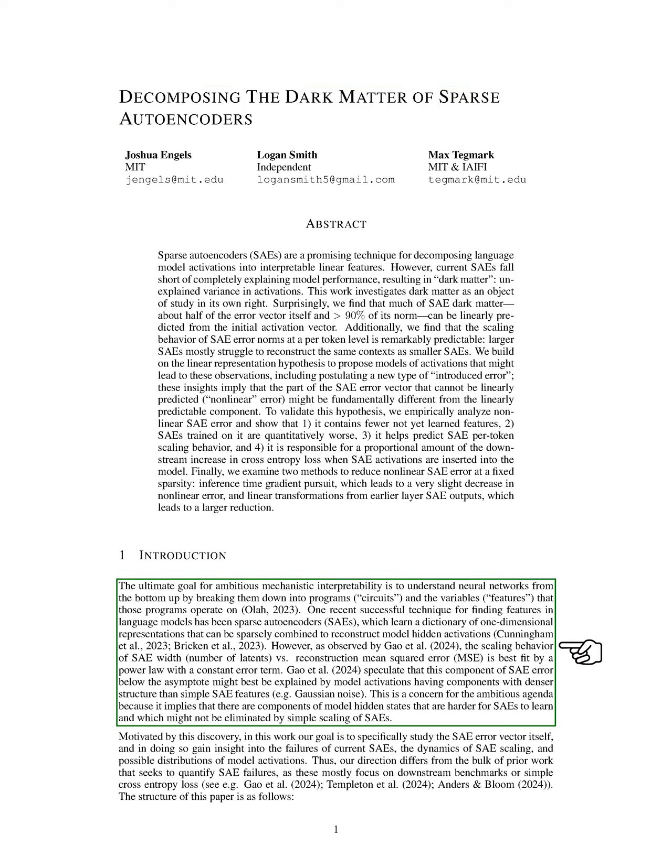Introduction. In this section, we aim to explore the ambitious goal of mechanistic interpretability, which involves understanding neural networks by breaking them down into their underlying programs, referred to as circuits, and the variables they use, known as features.